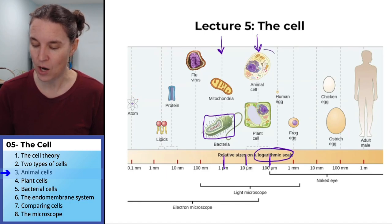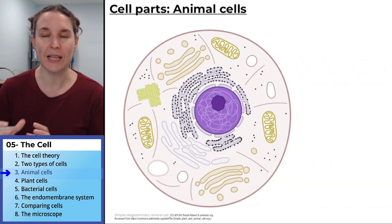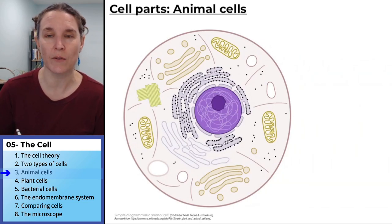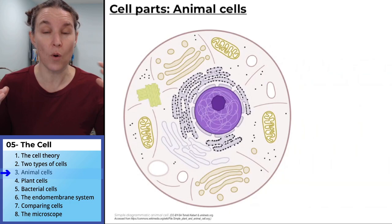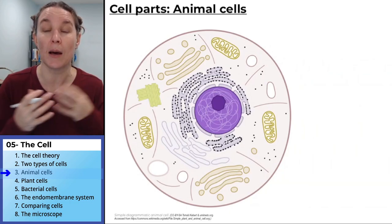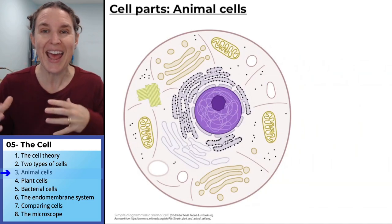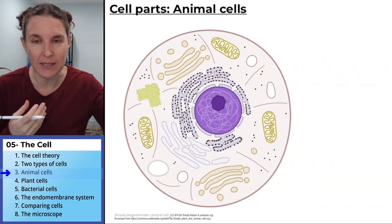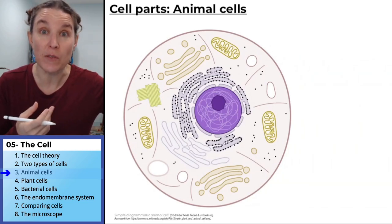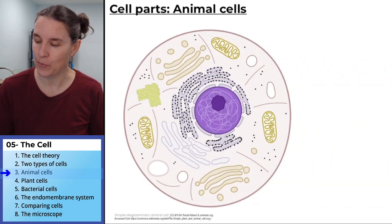We're going to start with the animal cell and just label this one right here. I'm going to give you the organelles — the names of the parts — and some information about these cells. And then we're going to see these structures again when we look at the protist.